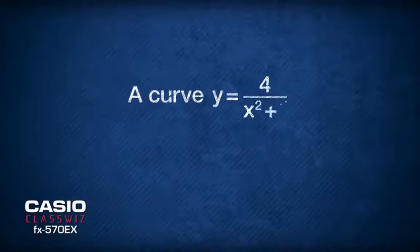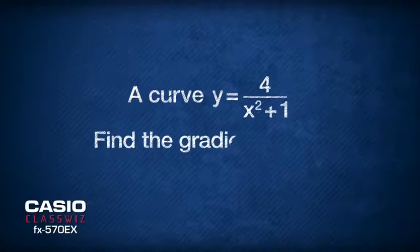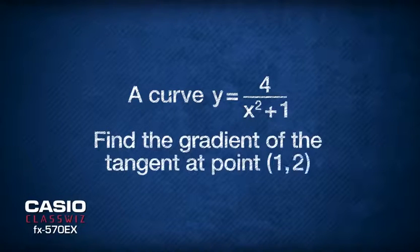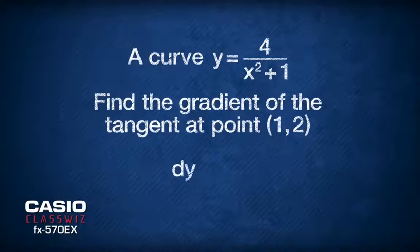Here's the question: given the equation of a curve y equals 4 over x squared plus 1, find the gradient of the tangent at point (1, 2). To find the general gradient of tangent, we have to differentiate.